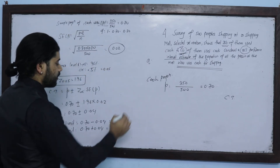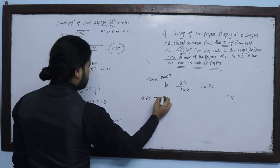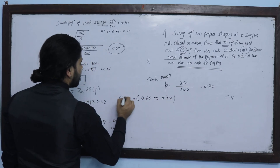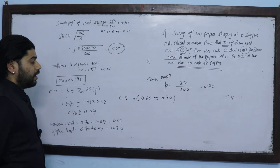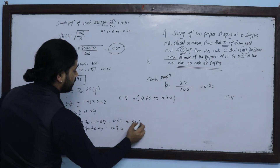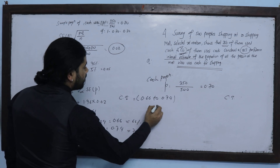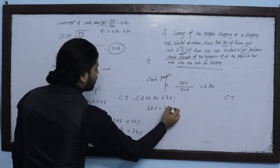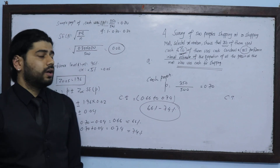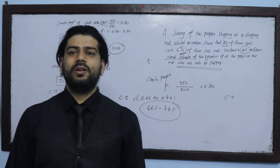The 95% confidence interval is 0.66 to 0.74 — that is, 66% to 74%. This is our estimation of the proportion of all persons at the shopping mall who use cash.